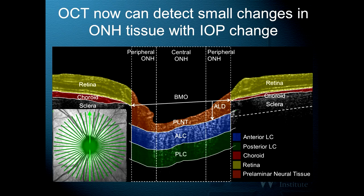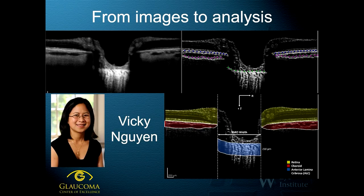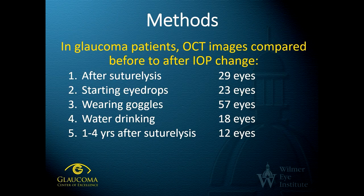We now move to how we're using OCT imaging to look at both the short-term and long-term behavior of the lamina. Dr. Vicky Nguyen, a mechanical engineering professor at Johns Hopkins who has worked with me, has developed methods to isolate within OCT images the lamina cribrosa. To show stress-strain analysis, one has to have images taken at two different pressures. We've used a number of methods, most prominently suture lysis after trabeculectomy glaucoma surgery, and starting or stopping eye drops, which we've done in quite a number of eyes.